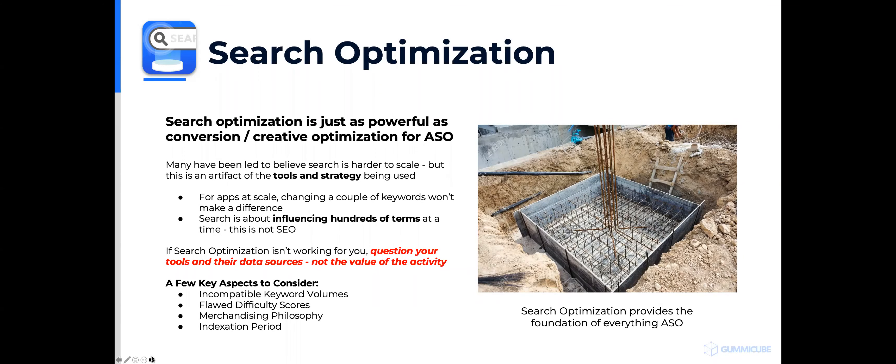For apps at scale, changing a couple of keywords doesn't make a difference. It's not about experimenting with one keyword at a time — it's about influencing hundreds of terms at a time. Apple and Google look at your click-through rates and use those to understand where they might merchandise you on related audiences throughout the store. If search optimization isn't working, maybe the data you're using about what keywords to pick isn't correct, or your strategy isn't accounting for how to influence merchandising in the store.